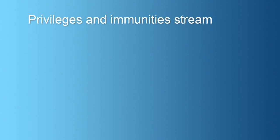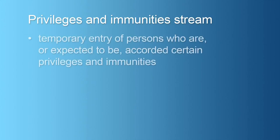The fourth stream, the privileges and immunity stream, allows for the temporary entry of persons who are, or are expected to be, accorded certain privileges and immunities under the International Organisation's Privileges and Immunities Act 1963, or the Overseas Missions Privileges and Immunities Act.